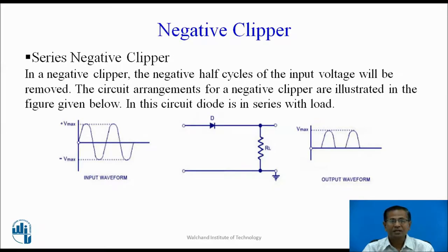Negative Clipper — Series Negative Clipper: In this circuit, the main control element is connected in series and it clips the negative half cycle — that is why the name is the series negative clipper. During positive half cycle, diode D is forward biased, it acts as a closed switch, so current flows in the clockwise direction and voltage is developed across the load — the positive half cycle appears across the load. During negative half cycle, diode D is reverse biased, it acts as open, therefore the voltage across load is zero, meaning it clips the negative half cycle.